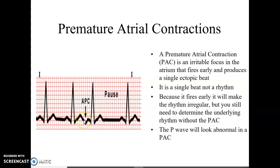A really big distinction to make is that my PR interval is still a normal measurement. In future classes when we start learning about things that come from the junction, we'll find that we can get upside down P waves with that as well, but the PR interval would shorten. This one here has an upside-down P wave but a normal PR interval. You'll also notice that this QRS complex does not change in its configuration. So this is going to make this a premature atrial contraction.